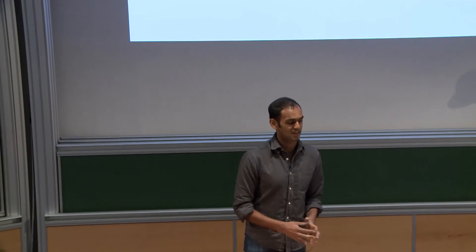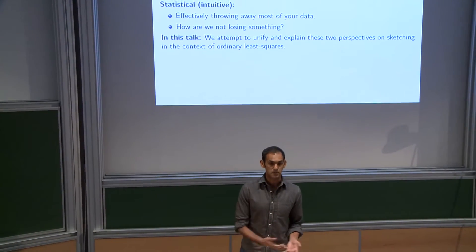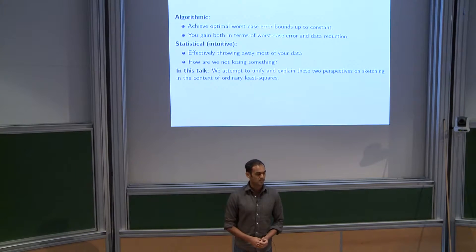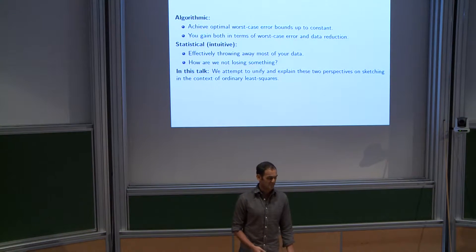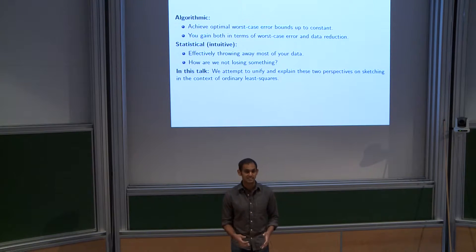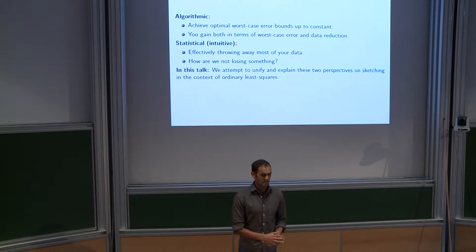To explain the genesis of this problem: there are two perspectives. A lot of the work done on sketching prior to this has largely been in the applied math and theoretical computer science literature — I'm describing this as the algorithmic or computational perspective. People like Michael Mahoney and Dan Spielman have worked on this a lot. The general principle is that by doing sketching, you still get close to optimal worst-case error bounds — even by doing sketching.